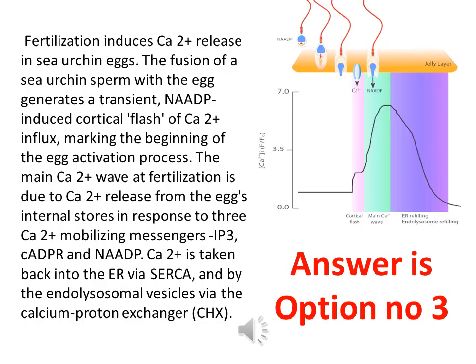Coming to sea urchin fertilization: fertilization induces CA2+ release in the sea urchin egg. The fusion of sea urchin sperm with the egg generates a transient NAADP-induced cortical flash of CA2+ influx, marking the beginning of the egg activation process. The main CA2+ wave at fertilization is due to CA2+ release from the egg's internal stores in response to three CA2+ mobilizing messengers: IP3, cADPR, and NAADP. So option 3, inositol-1,4,5-triphosphate (IP3), is the correct answer.